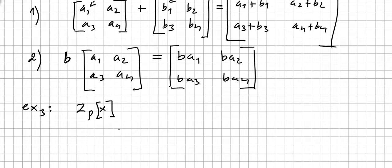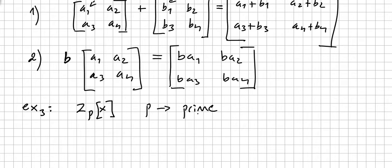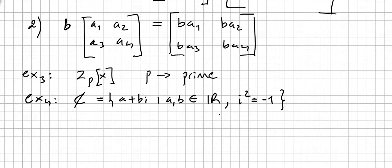Another example is the polynomials over the ring Zp. So you have polynomials with coefficients in Zp — this is also a vector space over Zp. Of course, p here is prime.